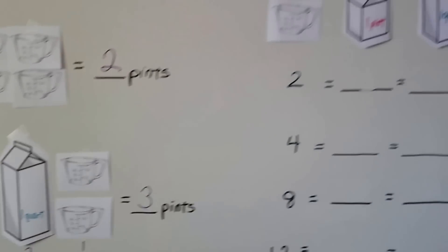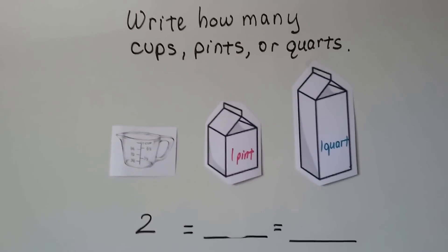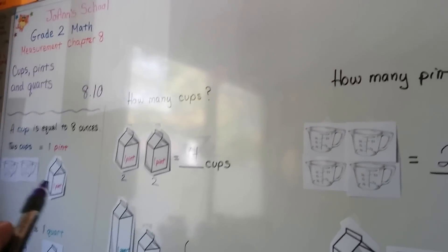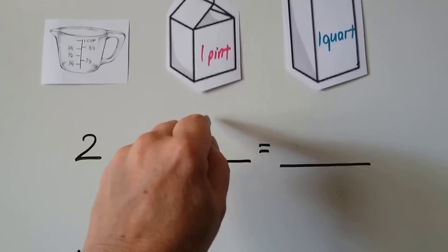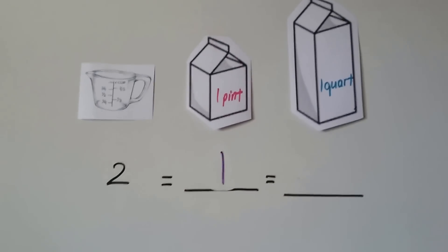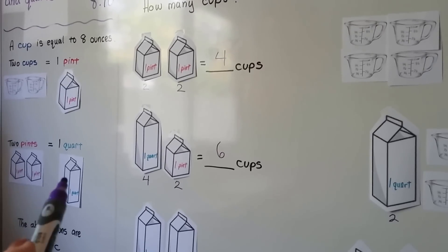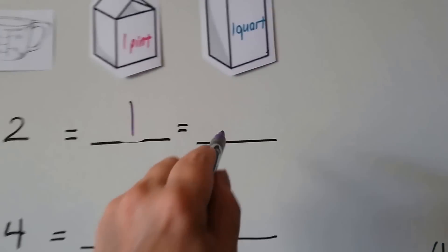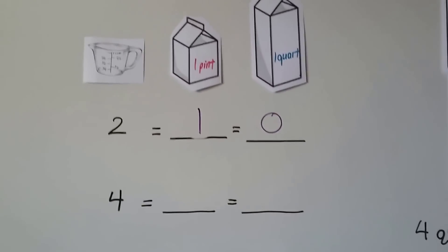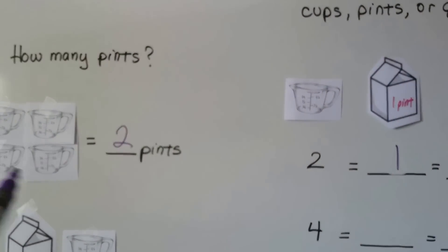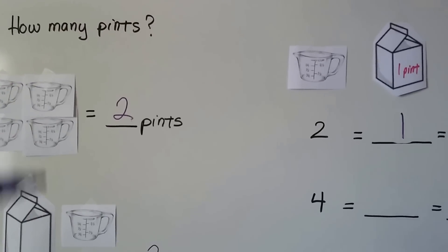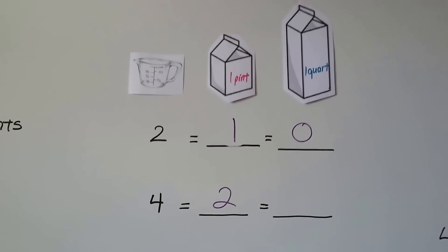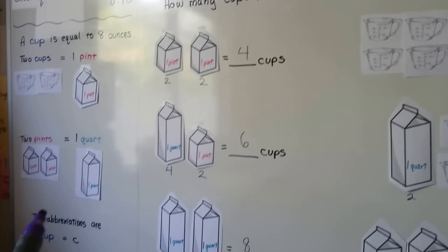Now this is going to get a little trickier. Let's see if we can write how many cups, pints, or quarts they would be. Two cups is equal to how many pints? Two cups makes one pint. So if we had two cups, we'd have one pint. How many quarts would we have? We need two pints to make one quart, so if we only had one pint, we wouldn't have any quarts. That would be zero — we don't have enough to make a quart. What if we had four cups? Here's four cups and we saw that it made two pints. So if we had four cups, it would be equal to two pints. Two pints makes one quart. That means four cups makes a quart, or two pints makes a quart.